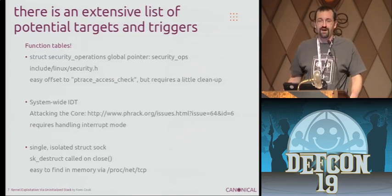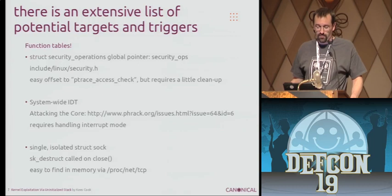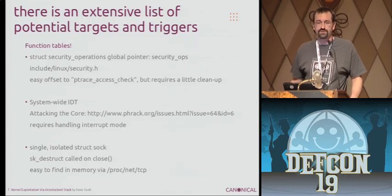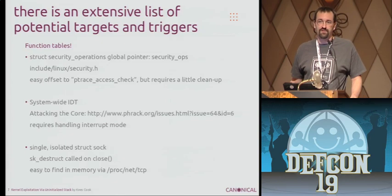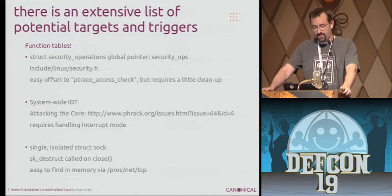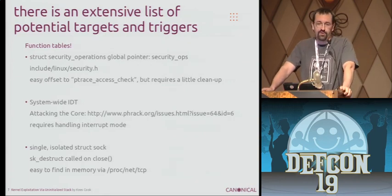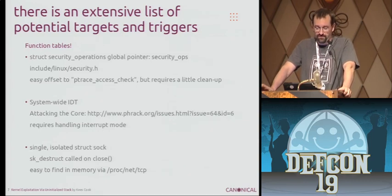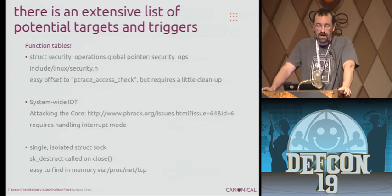With an arbitrary write, the way to change program flow is to change function pointers — you can aim the normal operation of the kernel into something that you have written as the attacker. Function tables are great for that because they're just lists of functions, and if you can find a way to trigger that function, you've managed to trick the kernel into running your code. One of the first ones I played with was security ops, since I was familiar with the Linux security module interfaces — basically for SELinux, AppArmor, and other LSMs that use the security ops function table for high-level actions.